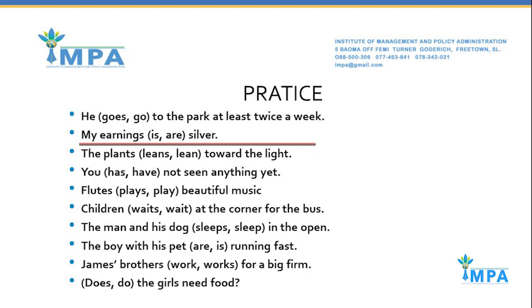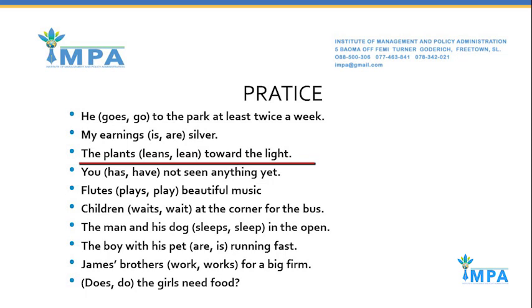Next: 'My earrings — is or are.' The word earrings is a plural subject, so the correct verb should be 'are.' Next: 'The plants — leans or lean — toward the light.' The plants is a plural subject, therefore the correct verb should be 'lean.' The plants lean toward the light.